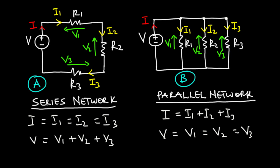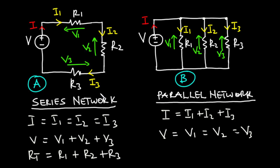Now let's talk about the last item on the list, which is total resistance. So, how do we find the total resistance for both circuits? For a series network, the total resistance is equal to the sum of the individual resistors in the circuit. So, for this case with three resistors, RT, which is the total resistance, is equal to R1 plus R2 plus R3. In a case where we have two resistors connected in the circuit, then the total resistance is going to be R1 plus R2.